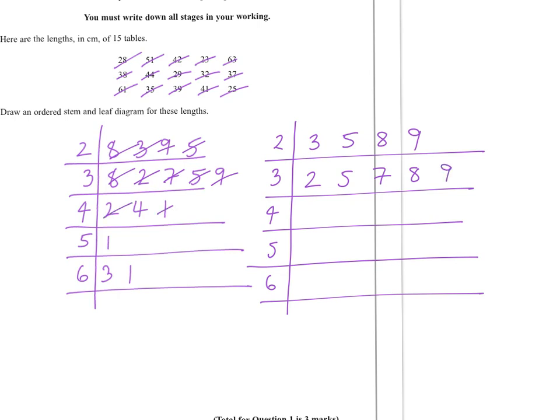And then one, two, four. A one and then one and three. So this is how the final outcome should look like, and that's an ordered stem and leaf diagram.